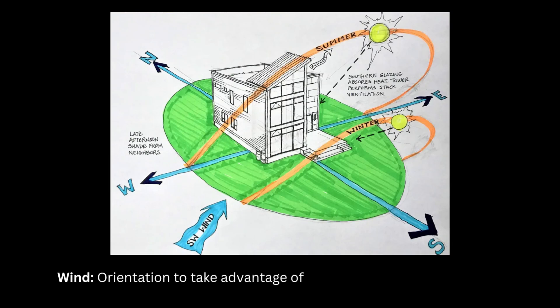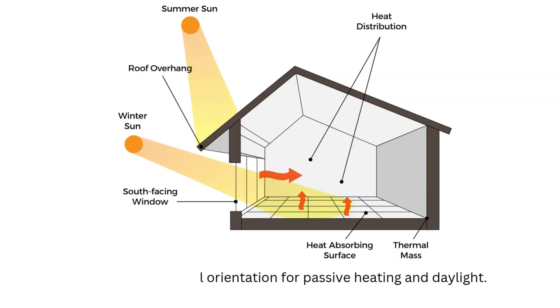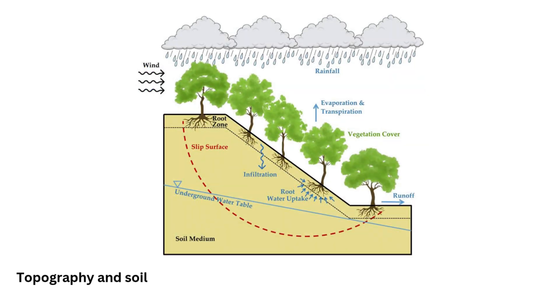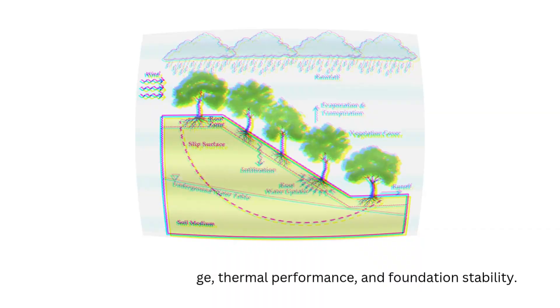Wind: orientation to take advantage of or protect from prevailing winds. Sun path: optimal orientation for passive heating and daylight. Topography and soil: drainage, thermal performance, and foundation stability.